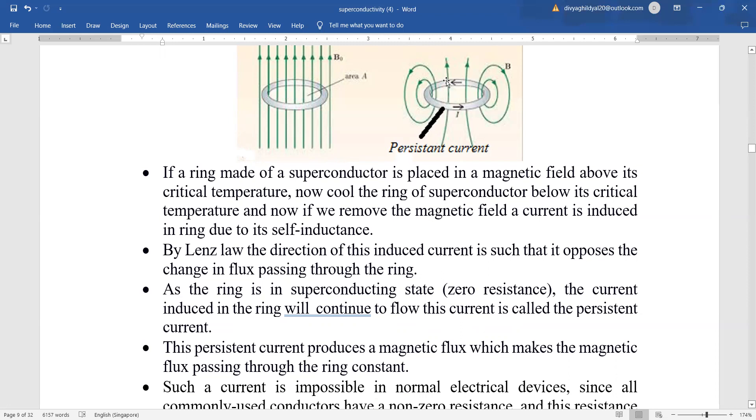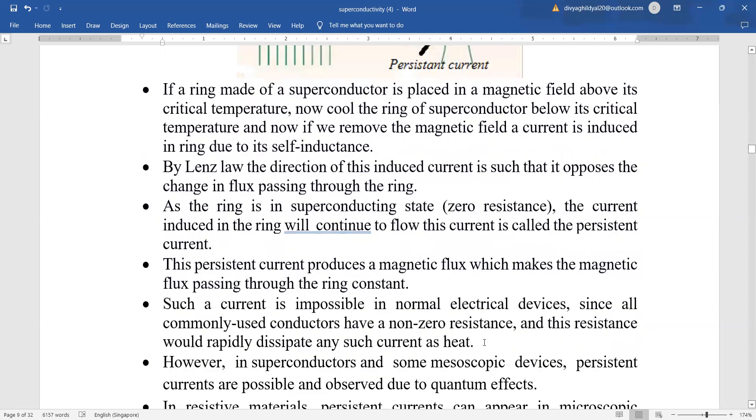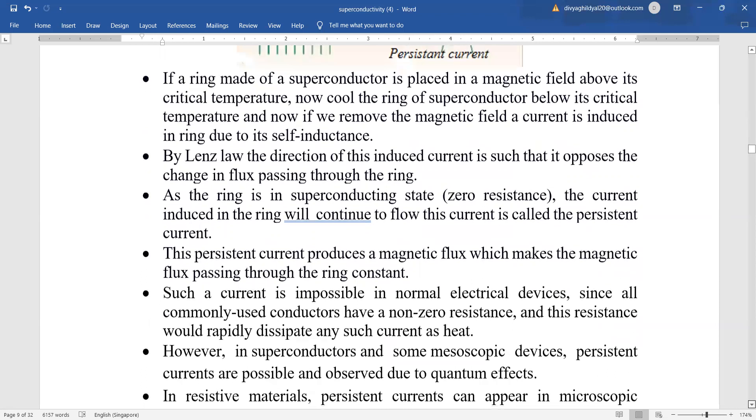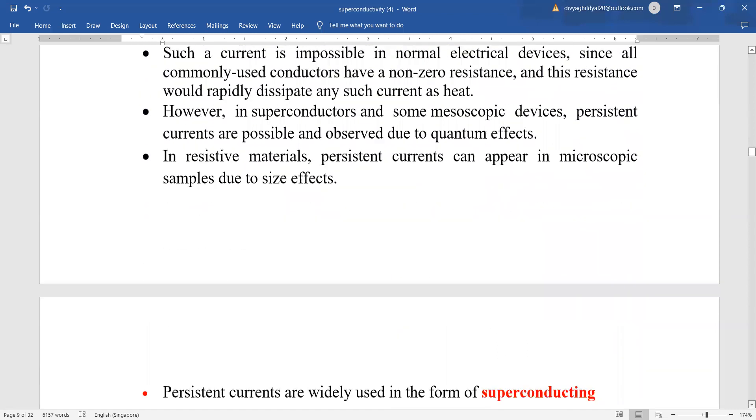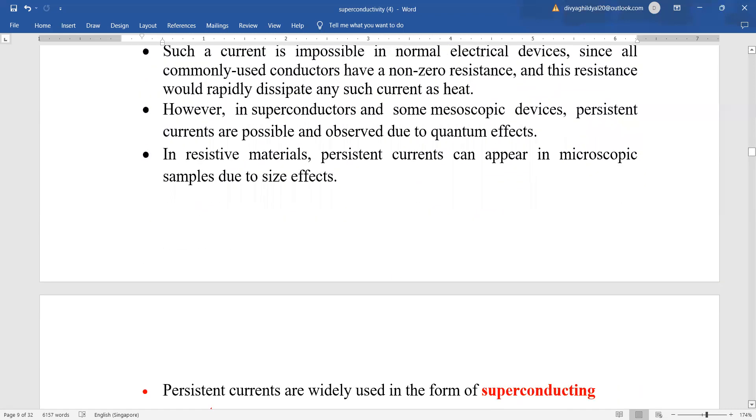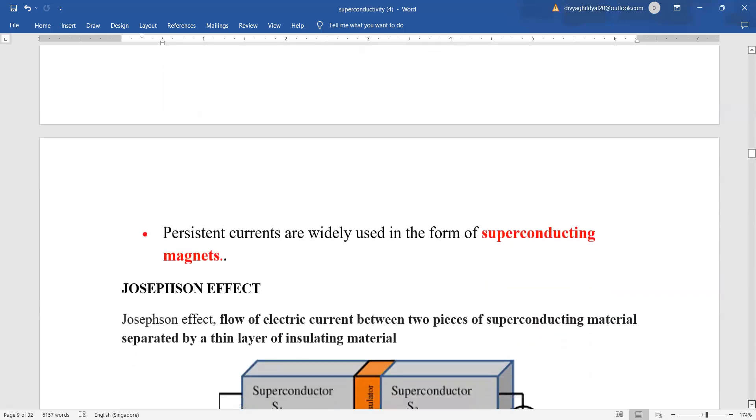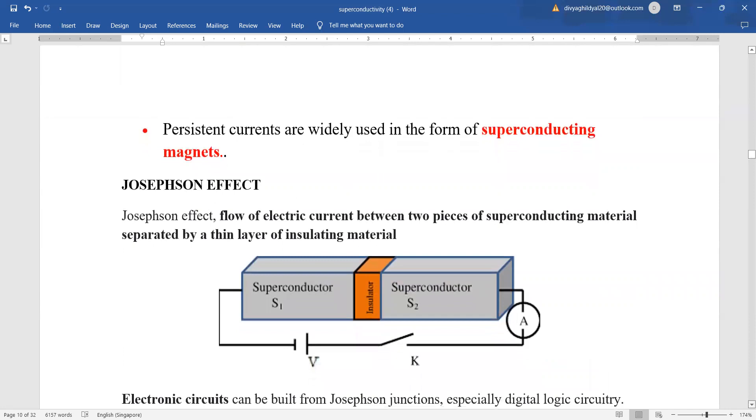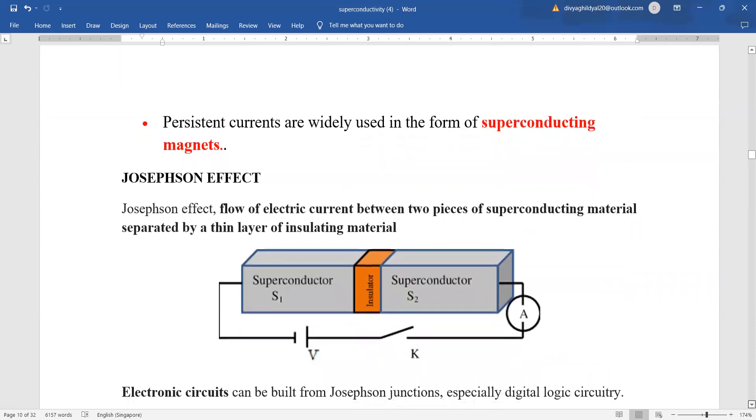Since the ring is in superconducting state that is zero resistance, the current in this ring will continue to flow and this is known as persistent current. Such a current usually is impossible in normal electric devices but in superconductors and some macroscopic devices, persistent currents are possible and they are basically observed due to quantum effect. Persistent currents are widely used in superconducting magnets.